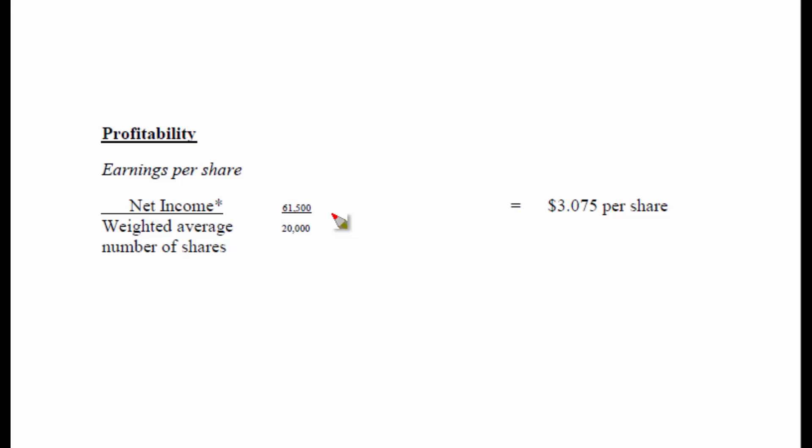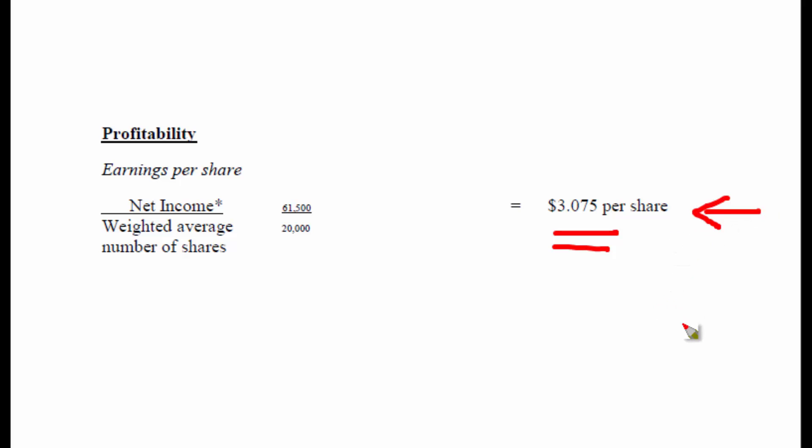So earnings per share: if we have made $61,500 in profit for the year and 20,000 shares get to share in that profit, then each share gets $3.075. This tells us that anybody who purchased one share has earned this amount this year.